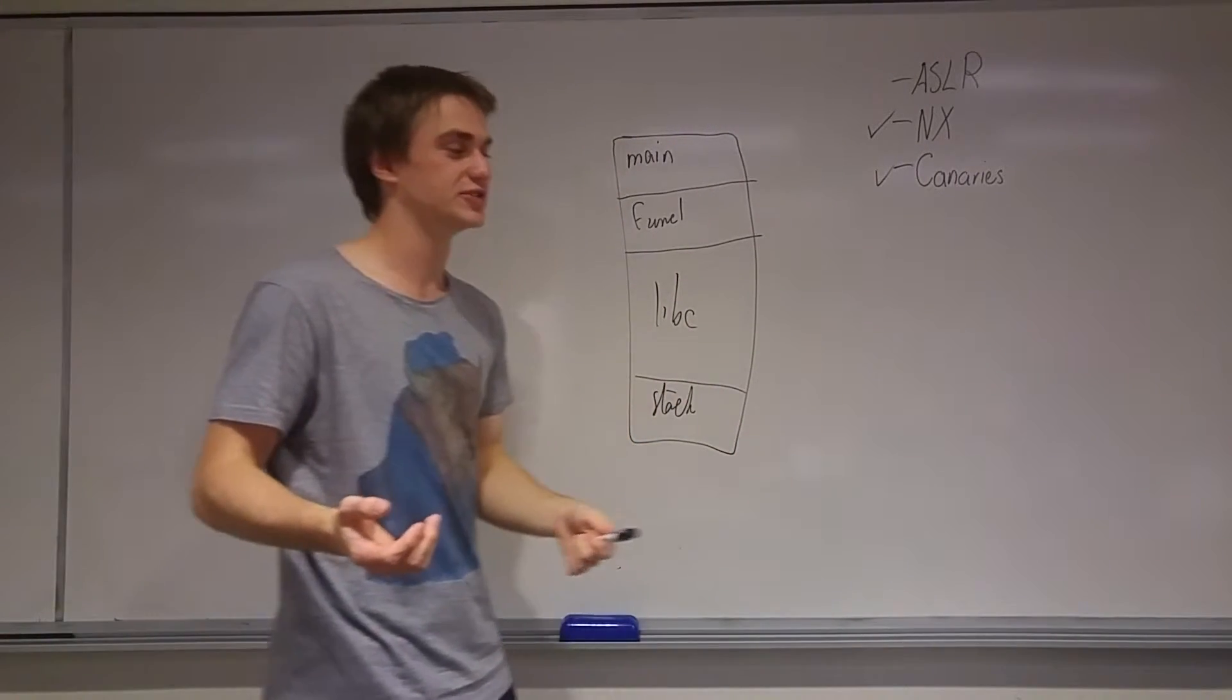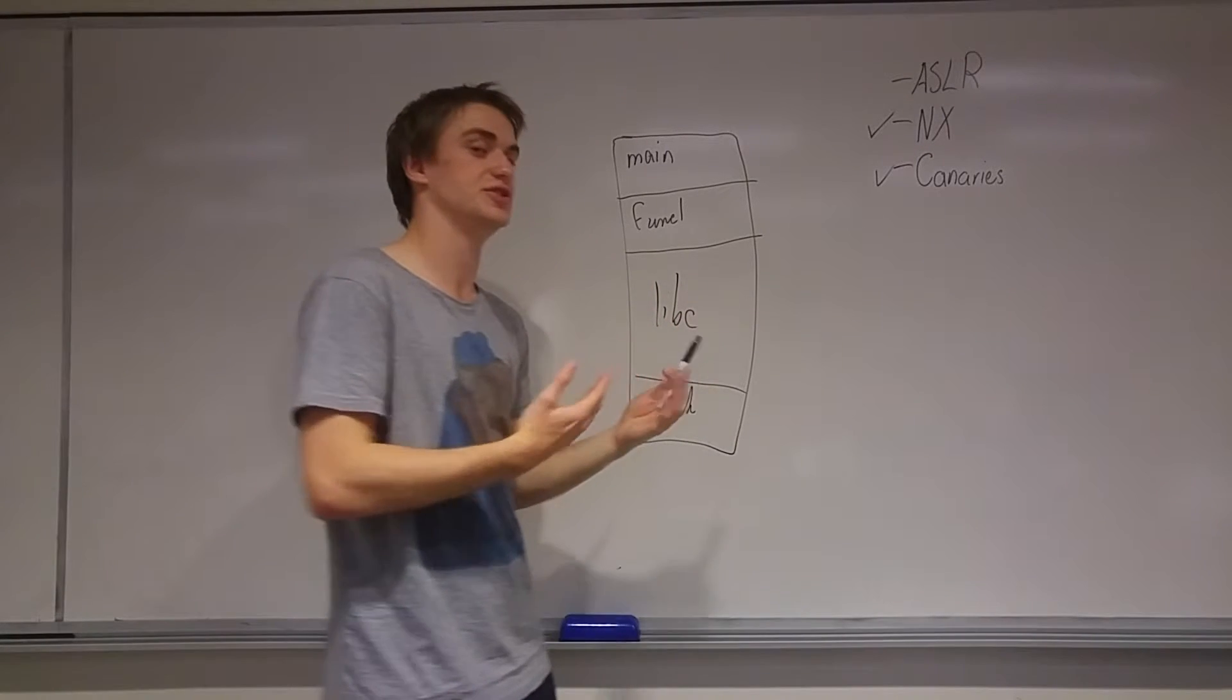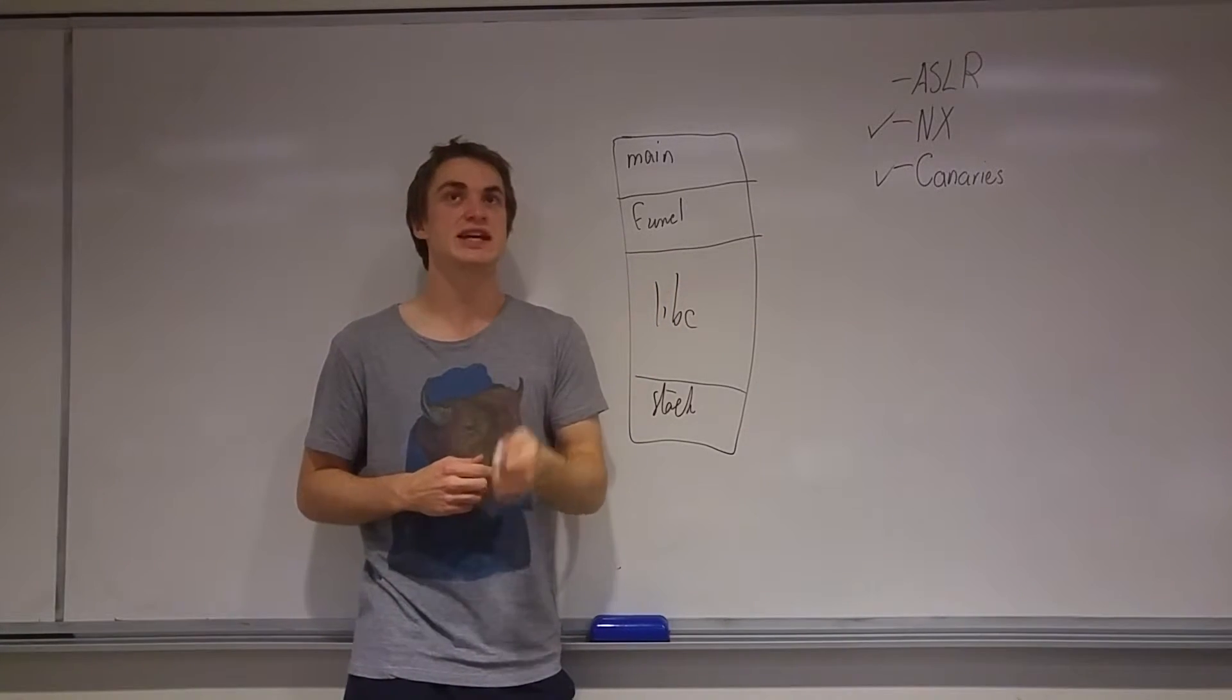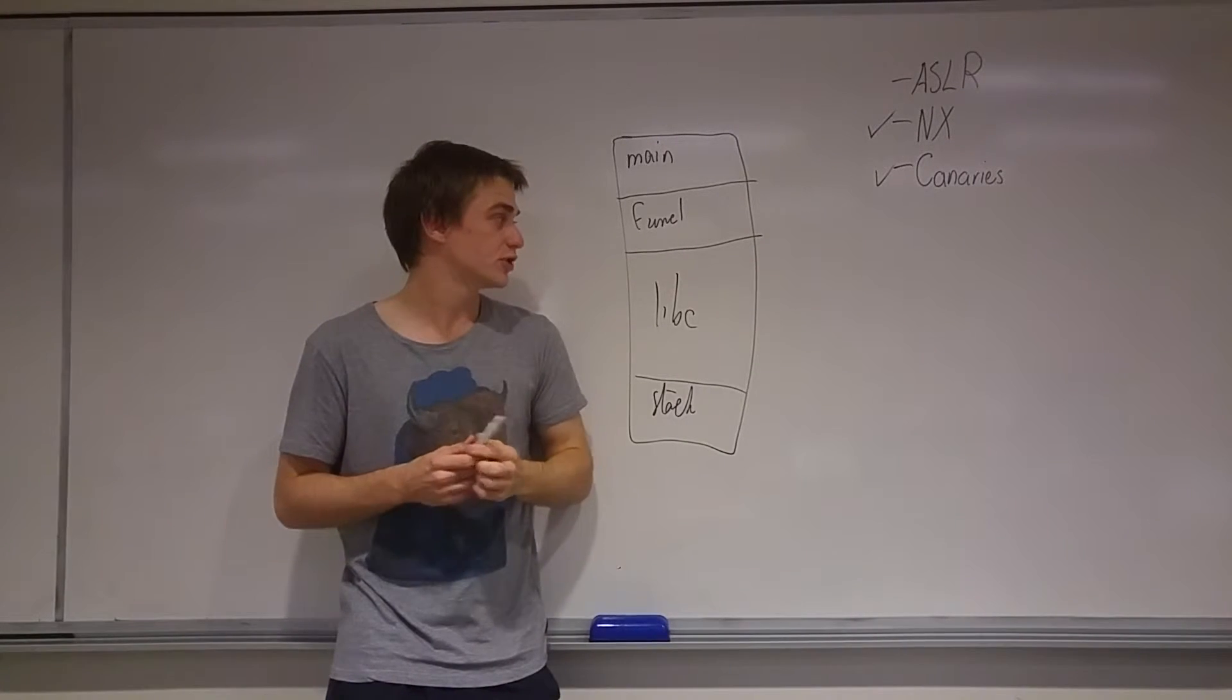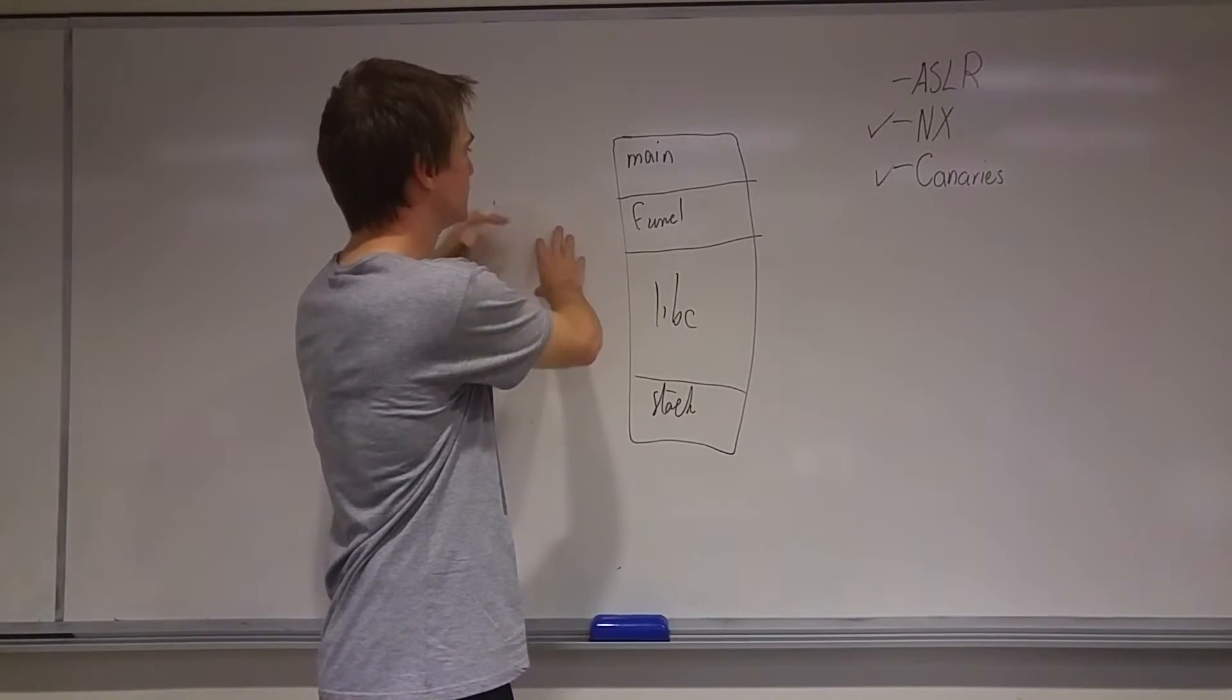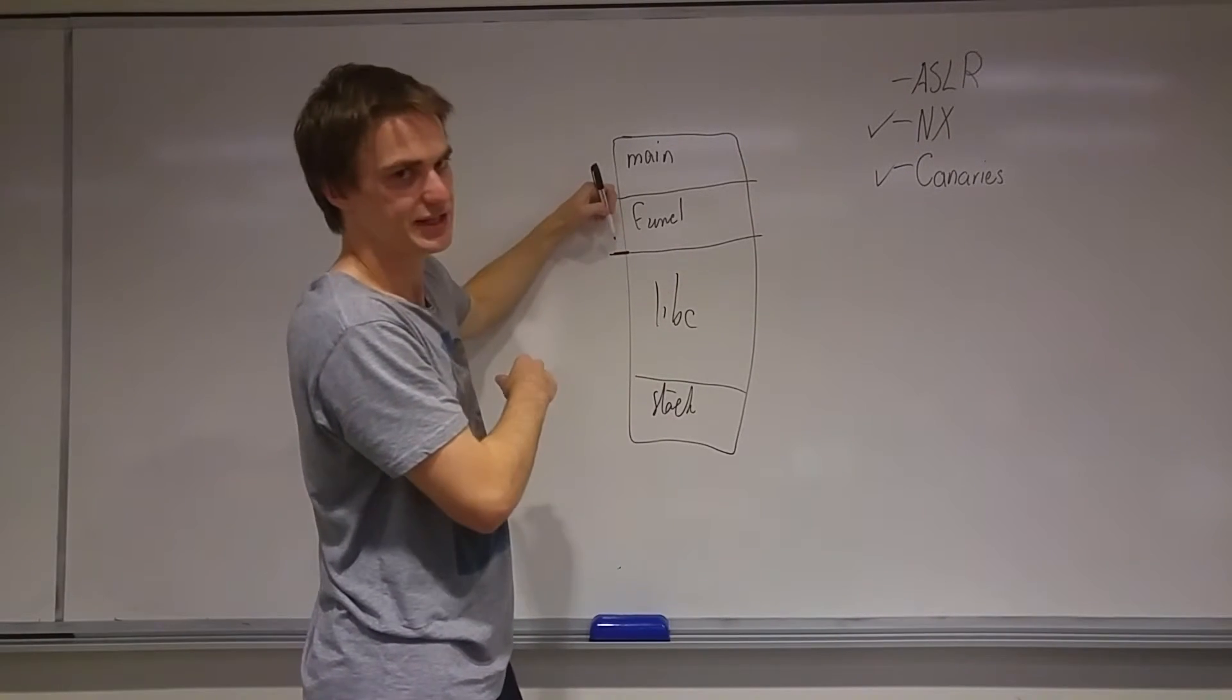Luckily there is also a way around this, but you need to find another vulnerability before you can actually do that. So typically the way we get around this is if we can find out the starting address of libc from our program, this effectively allows us to then use the offsets from libc and add them to where we know libc starts. So even if it has been randomized, we know that libc starts here, right?